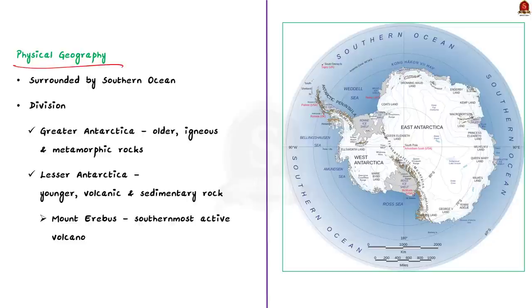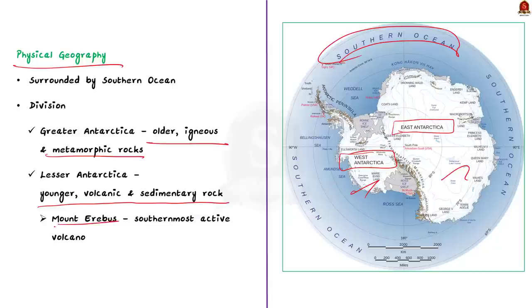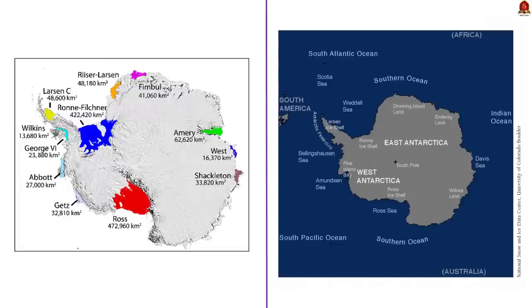Let us see the physical geography of Antarctica. Antarctica is in the southern hemisphere and is surrounded by the Southern Ocean. Antarctica can be divided into two parts: Lesser Antarctica and Greater Antarctica. Greater Antarctica, also known as East Antarctica, is composed of older igneous and metamorphic rocks. Lesser Antarctica, also known as West Antarctica, is made of younger volcanic and sedimentary rock and is part of the Ring of Fire. Mount Erebus, located on Antarctica's Ross Island, is the southernmost active volcano on Earth. The largest ice shelves are the Ronne-Filchner and Ross ice shelves.